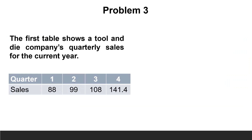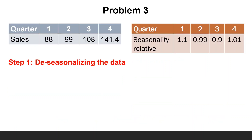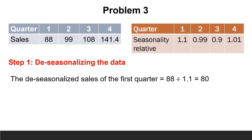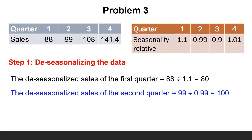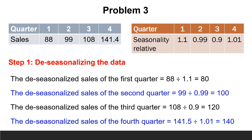The third problem: the first table shows a tool and die company's quarterly sales for the current year, while the second table shows the seasonality relatives of the four quarters. What sales would you predict for the first quarter of next year? The given data should be deseasonalized. The deseasonalized sales of the first quarter is 88 divided by 1.1, equals 80. The second quarter is 99 divided by 0.99, equals 100. The third quarter is 108 divided by 0.9, equals 120.